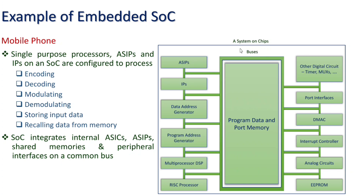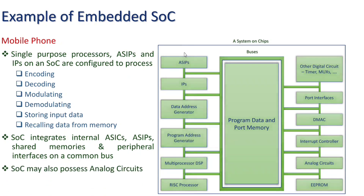System on chip explains how many elements — processors, analog circuits, digital circuits, and even protocols — are integrated in a single chip. It has memories and processors. Now I will explain what is Application Specific IC. ASIC stands for Application Specific Integrated Circuit, designed for specific applications.